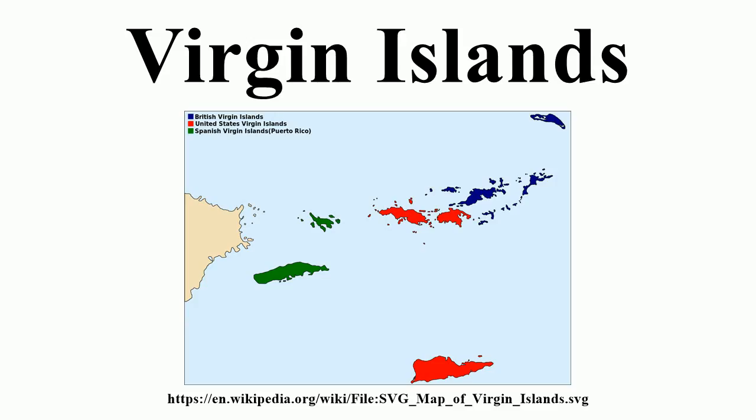Etymology: Christopher Columbus named the islands after Saint Ursula and the 11,000 Virgins, shortened to the Virgins. The official name of the British territory is the Virgin Islands, and the official name of the U.S. territory is the Virgin Islands of the United States. In practice, the two island groups are almost universally referred to as the British Virgin Islands and the U.S. Virgin Islands.